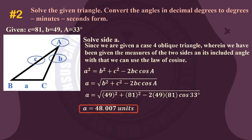Using our calculator, we arrive at side a = 48.007 units, rounded to the nearest three decimal places.